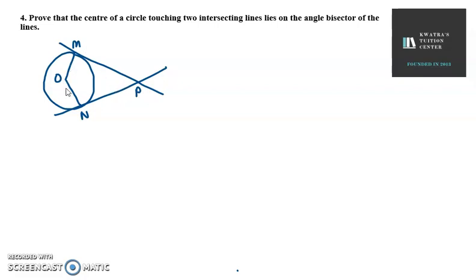So OM and ON are our radii in the circle. And OM, MP will make 90 degrees. And ON, NP will make 90 degrees. Because you know, the tangent to the radius is perpendicular. So here,